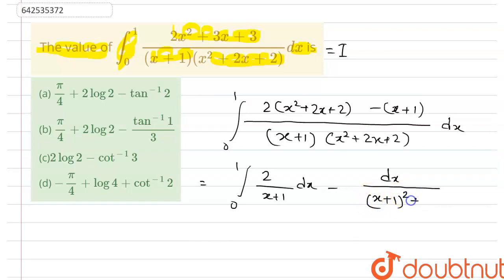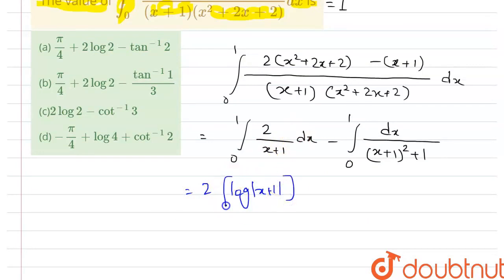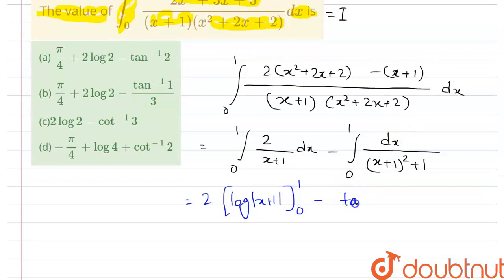And we will be left with 1, integration from 0 to 1. The value of the first integration is 2 log|x + 1|, with limit from 0 to 1. The value of the second integral is tan⁻¹(x + 1), with limit from 0 to 1, since dx/(x² + 1) = tan⁻¹(x), and here in place of x we have x + 1.